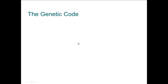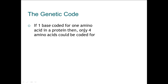Because there are 20 amino acids we need to code for, we get to something called the triplet code. If you only had one base coding for one amino acid, then you could only ever make four amino acids — A would code for one, thymine for another, cytosine for one more, and guanine for the fourth.